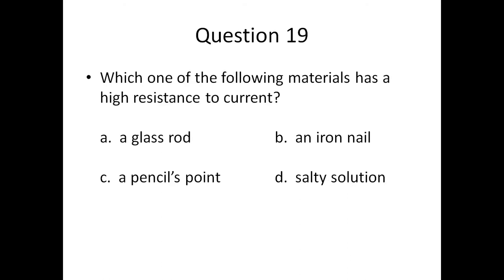Question nineteen: which of the following materials has a high resistance to current? A) a glass rod, B) an iron nail, C) a pencil's point, or D) salty solution.